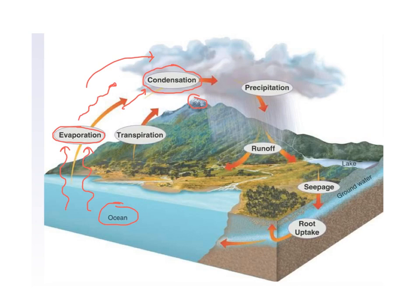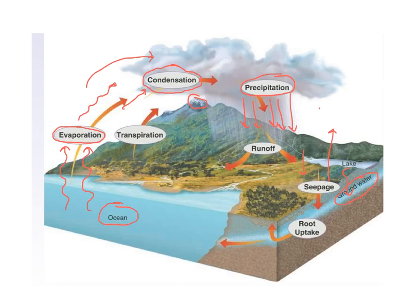Sometimes water falls from the sky — snow, rain, sleet, hail. Anytime water falls from the sky, whether it's a solid like snow or a liquid like rain, that is called precipitation. Once water gets onto the ground, sometimes it seeps below the ground to form groundwater — kind of like big lakes underneath the ground. Another word for that seepage is percolation. Percolation is the process of water going underneath the ground to form groundwater, which can then be taken up by plants.